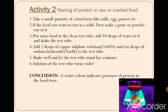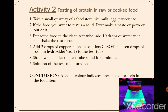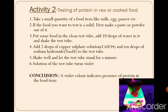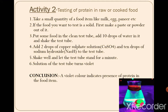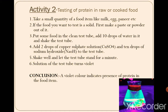Let us see the procedure. Take a small quantity of a food item containing protein, like milk, egg, or paneer. If the food is in solid form, first make a paste or powder it, then put some food in a clean test tube. Add 10 drops of water and shake gently. Then add 2 drops of copper sulfate solution and 10 drops of caustic soda or sodium hydroxide. Shake well and let the test tube stand for a minute. The solution turns violet, which indicates the presence of protein in the food item.